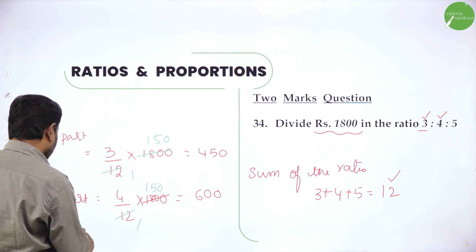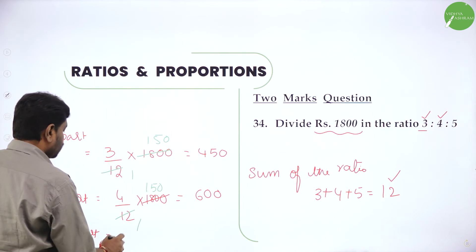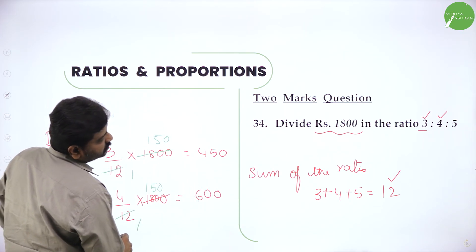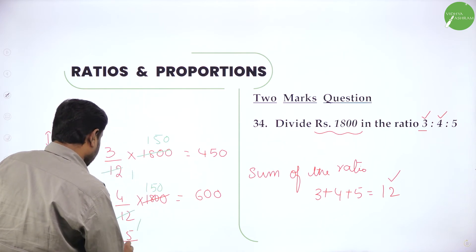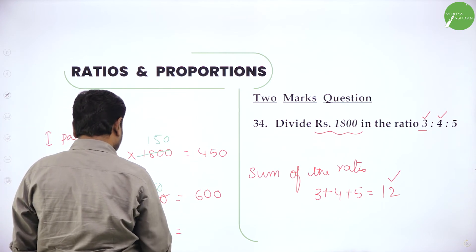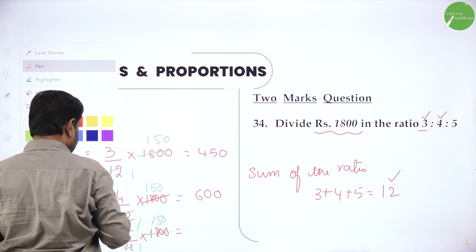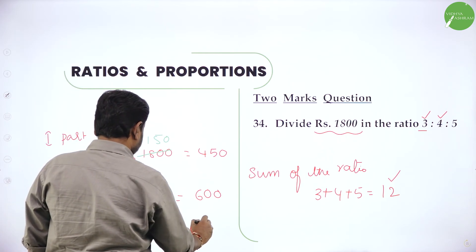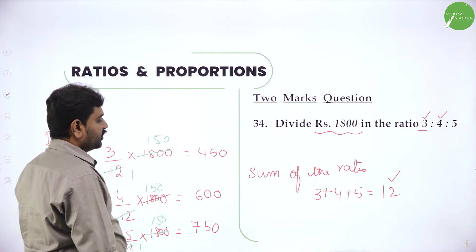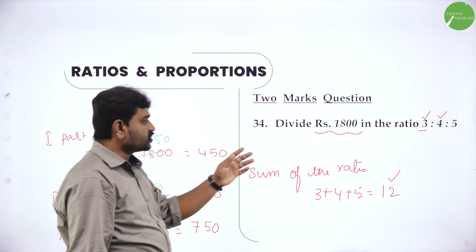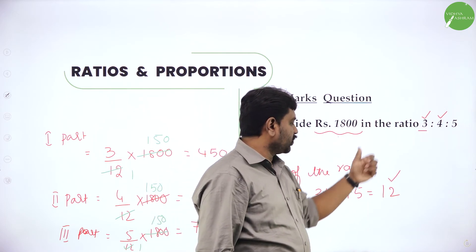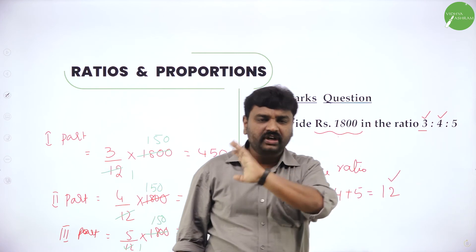Third part is the remaining amount. The last ratio is 5. So 5 by 12 into 1,800. To summarize: 3 plus 4 plus 5 gives you 12. Then 3 by 12 into total, then 4 by 12 into total, then 5 by 12 into total gives you 3 different parts.